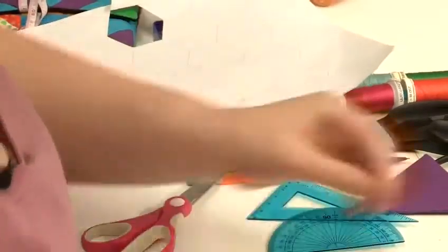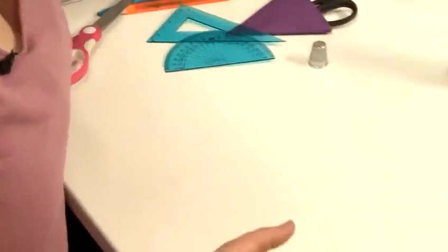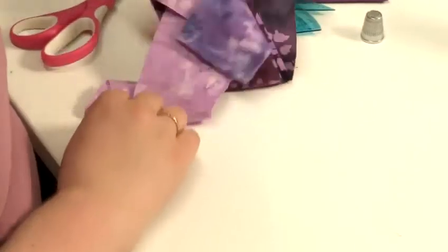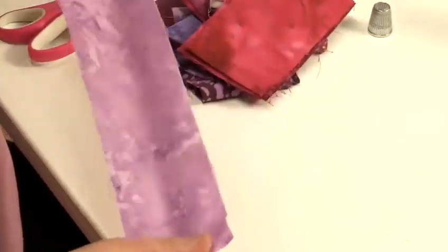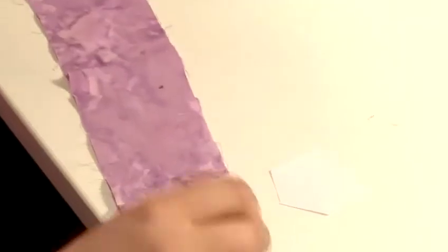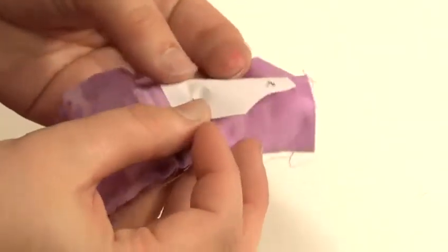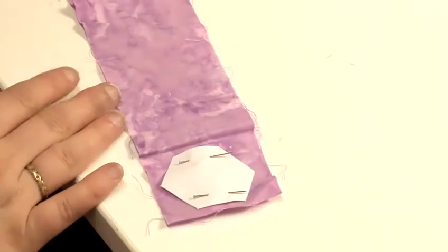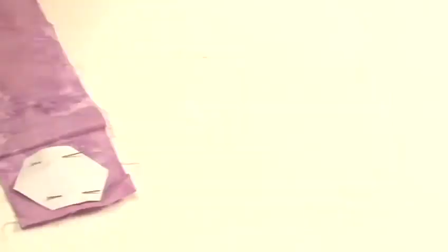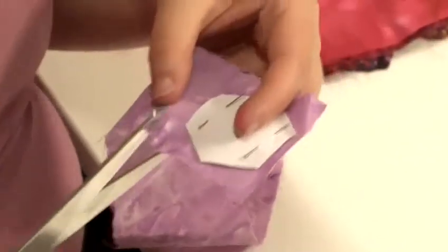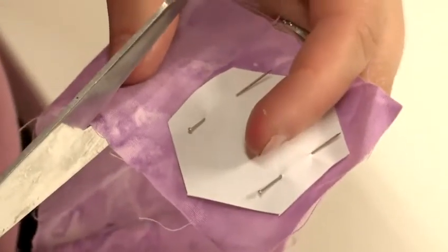The next thing you want to do is choose the fabric that you want to use. We'll have this purple one. Another option is that you can get pre-made templates for cutting out your fabric. So taking my scissors, I'm going to cut about a seam allowance of a quarter of an inch.